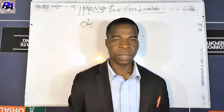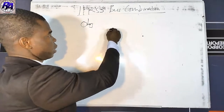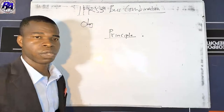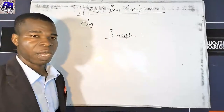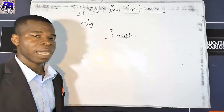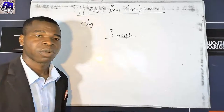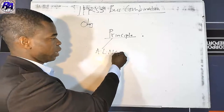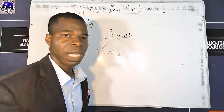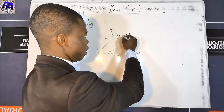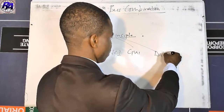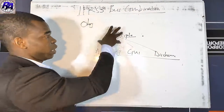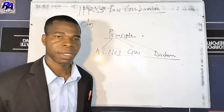The specific principles of IFRS 3 cover three things: how to recognize and measure the assets acquired, the liabilities assumed, and the non-controlling interest; recognition and measurement of goodwill; and disclosure. These are the specific objectives of IFRS 3 business combination.